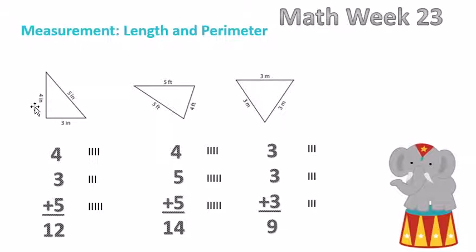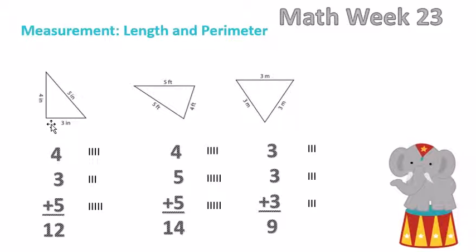We added four inches plus three inches plus five inches. To make it easier, I added tick marks: four tick marks next to the four, three tick marks next to the three, and five tick marks next to the five. When we add them all up we get twelve, so the perimeter of this triangle is twelve inches.